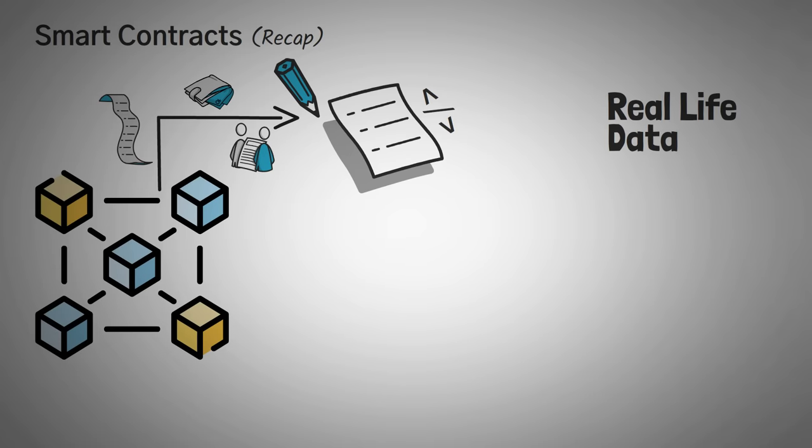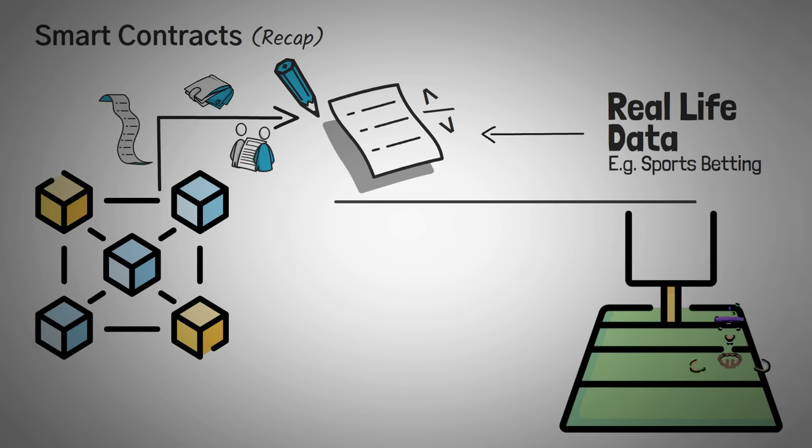But what if we could bond real-life data into a smart contract? That way we could create something like a sports betting app where we could bet on who is going to win a game or how many points a team may win by.